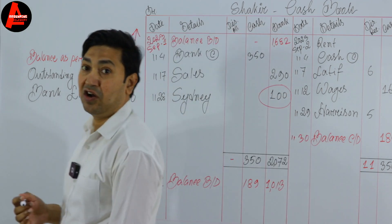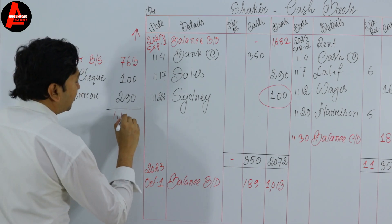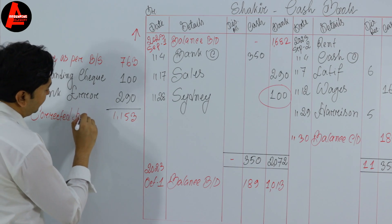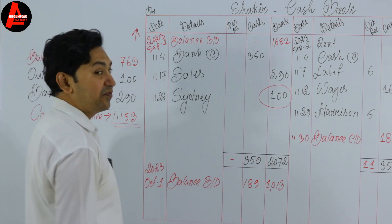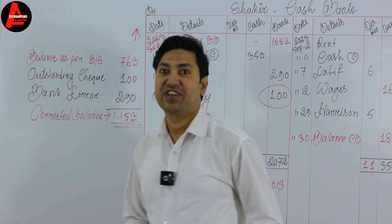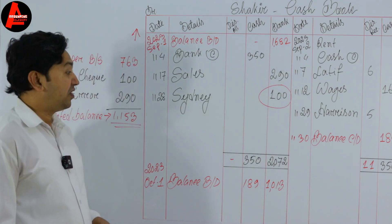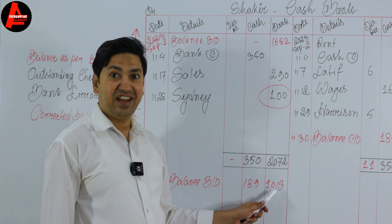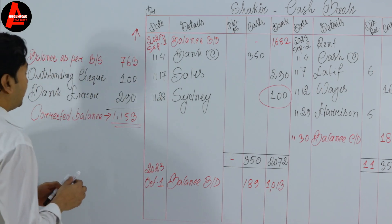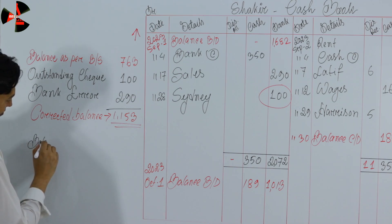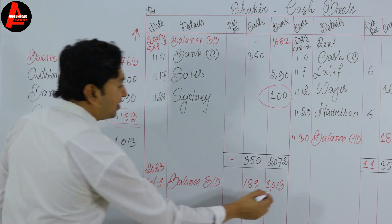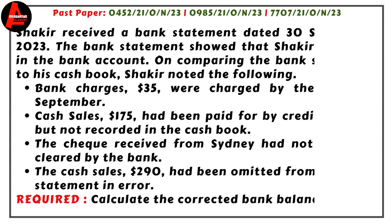Adding all three amounts — 763 plus 100 plus 290 — we get the corrected balance of 1153 dollars. Now if we start with the cash book balance, the balance shown is 1013 dollars. Let us write here: balance as per cash book = 1013 dollars.